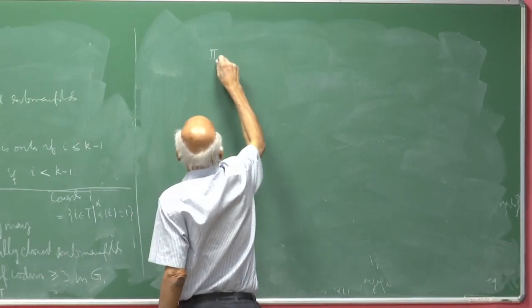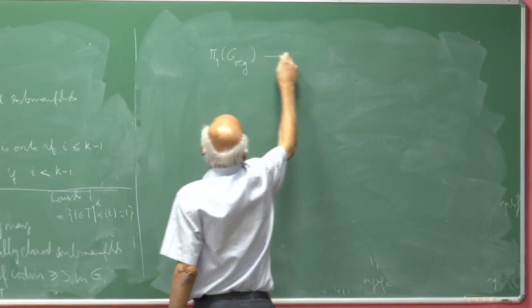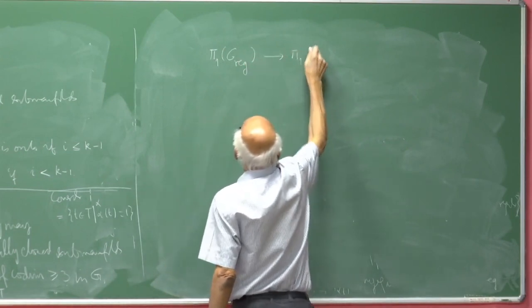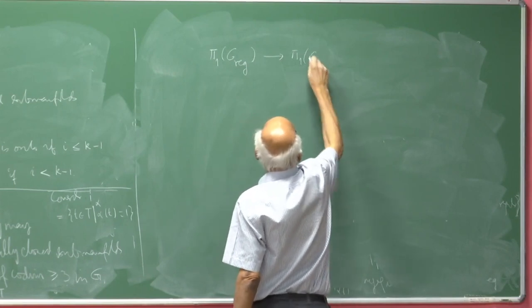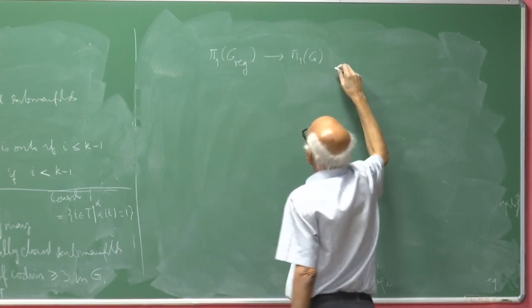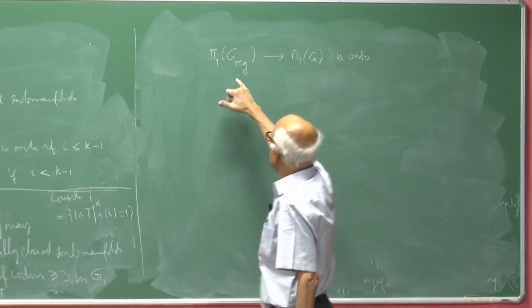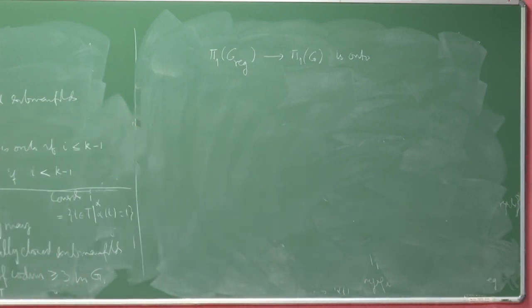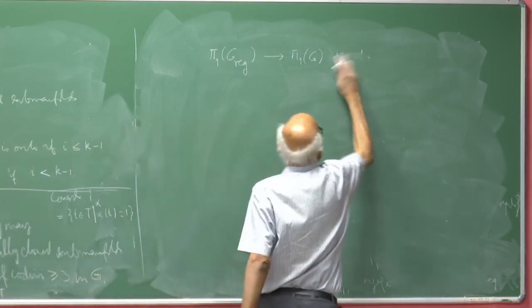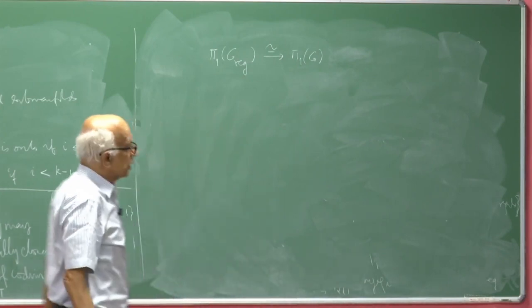Because of this topology theorem, we know that π₁(G_reg) → π₁(G) is surjective. So it suffices to prove that π₁(G_reg) is finite.